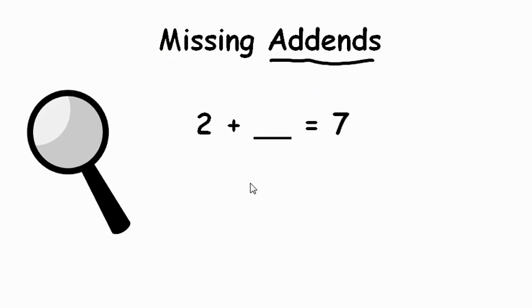Another neat way we can do this is by flipping our number around. We'll call this a flip around and change this from an addition to a subtraction fact. If you subtract the number here from the sum, from the answer, you'll find that missing number.